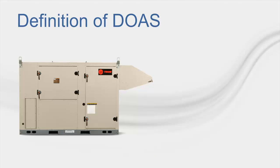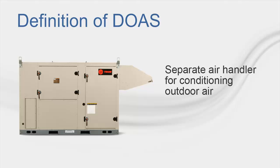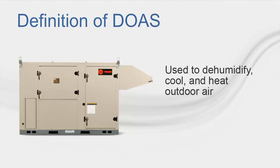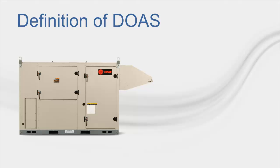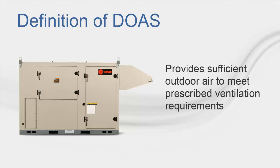So what is a dedicated outdoor air system, which I will abbreviate as DOAS? Dedicated outdoor air systems, also known as makeup air units or optional ventilation units, consist of a separate air handler that conditions incoming outdoor air before delivering it to local or terminal HVAC units or directly to the occupied spaces. The DOAS is typically used to dehumidify, cool, and heat the outdoor air, while local HVAC units handle the remaining space cooling and heating loads. Additionally, conditioning outdoor air separately from recirculated return air provides sufficient outdoor air to meet prescribed ventilation requirements.